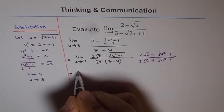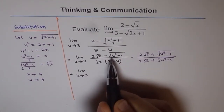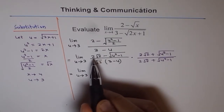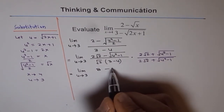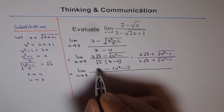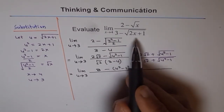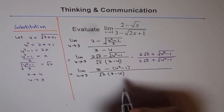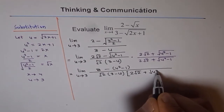Once we rationalize we expand and simplify the numerator. We get limit u approaches 3, and in the numerator we expect a squared minus b squared. So a squared is 2 squared times 2, giving us 8, and b squared is u squared minus 1. That gives us 8 minus (u squared minus 1) in the numerator, with the denominator being square root 2 times (3 minus u) times (2 square root 2 plus square root of u squared minus 1).